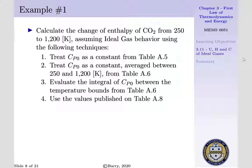Our first technique is going to treat our constant pressure specific heat as a constant value taken from table A5. Then our second technique is to treat our constant pressure specific heat as a constant, and we're going to average it between 250 and 1200 Kelvin using table A6. Our third technique is going to be an integral averaging technique, where we're going to evaluate the integral of CP0 between our temperature bounds taken from table A6. Lastly, we will use values published on table A8.